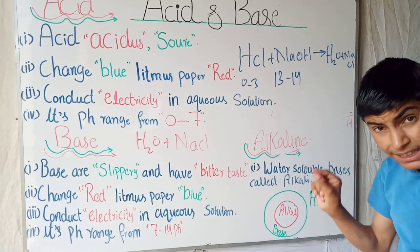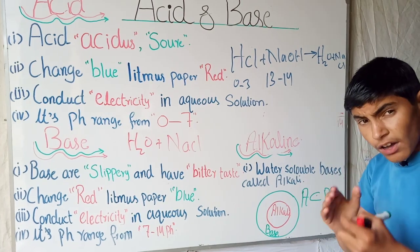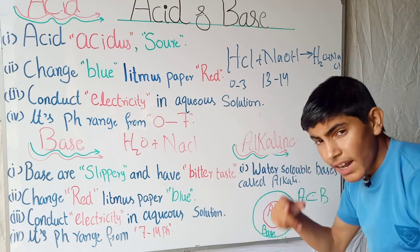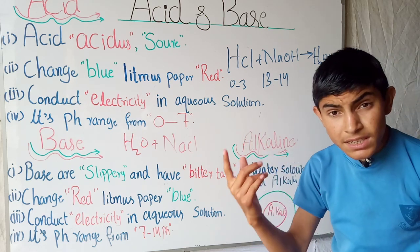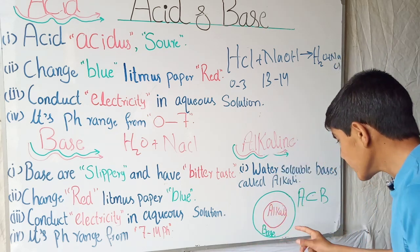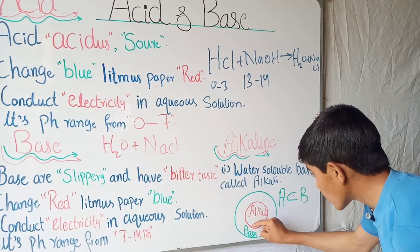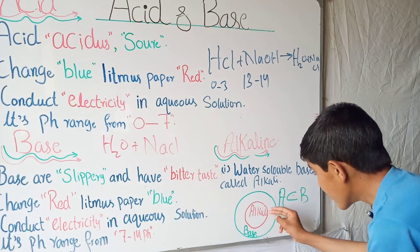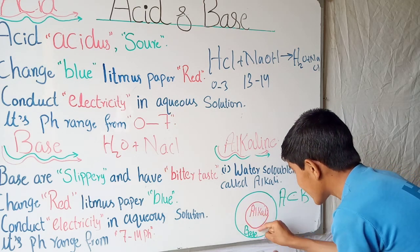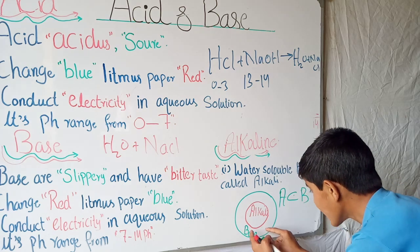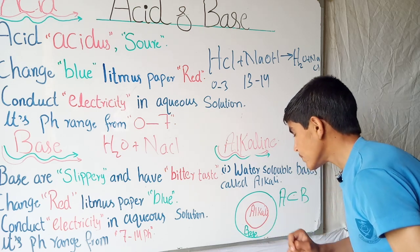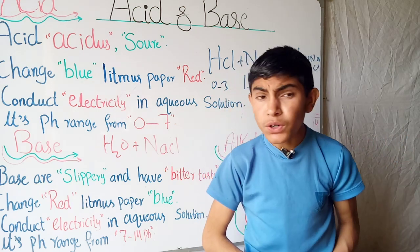All alkalies are bases, but all bases are not alkalies, because there are some bases which are not soluble in water, therefore we cannot say these are alkalies. The outer circle is the base, but the middle center one is the alkali. So all alkalies are present in base, but all bases are not alkalies because these bases are not belonging to the alkalies.